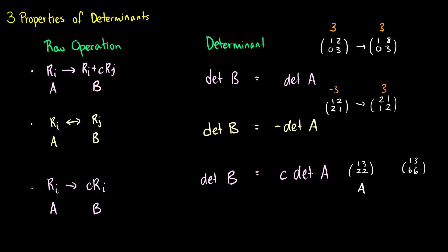The determinant of matrix A is 1 times 2 minus 2 times 3, which is 2 minus 6, equaling negative 4. For matrix B, it's 1 times 6 minus 3 times 6, which is 6 minus 18, giving negative 12. We took matrix A with determinant negative 4 and multiplied a row by 3, so the determinant of B is 3 times negative 4, which equals negative 12.